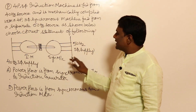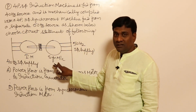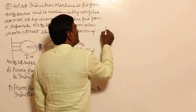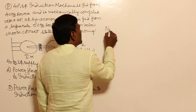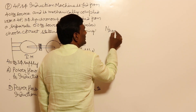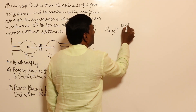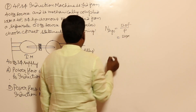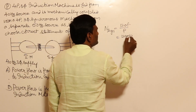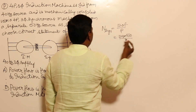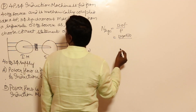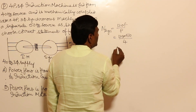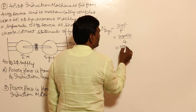Since the synchronous machine can only rotate at synchronous speed, let us calculate that speed. Using the formula NS = 120f/P, with frequency 50Hz and number of poles 4, the synchronous speed of the synchronous machine is 120 × 50 / 4 = 1500 RPM.